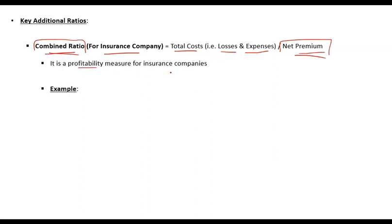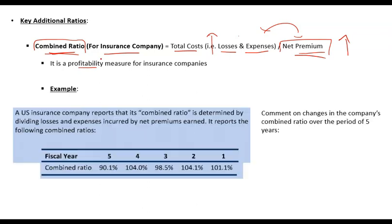The combined ratio is a profitability measure for insurance companies — it shows how losses relate to net premium. If net premium is growing at a higher rate compared to losses, profitability will be improving. If losses are growing faster than net premium, profitability will decline. For an insurance company, the key ratio to focus on is the combined ratio — how do losses relate to premium — rather than just sales growth.